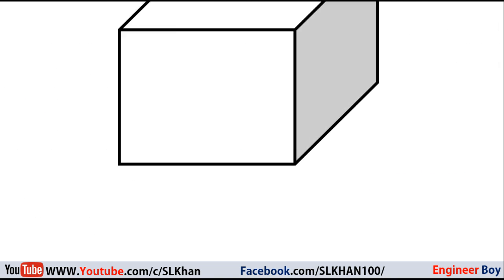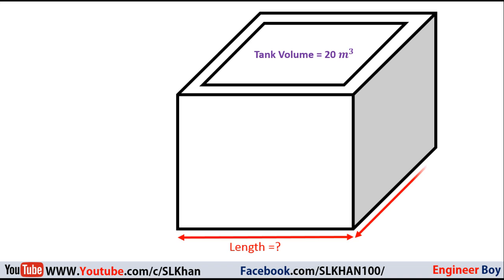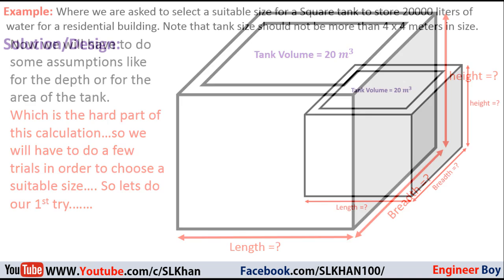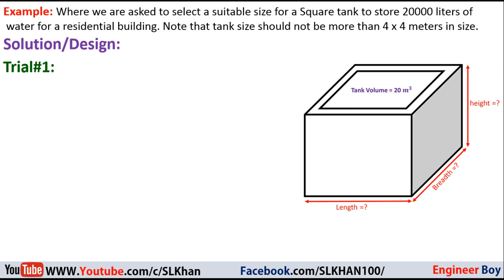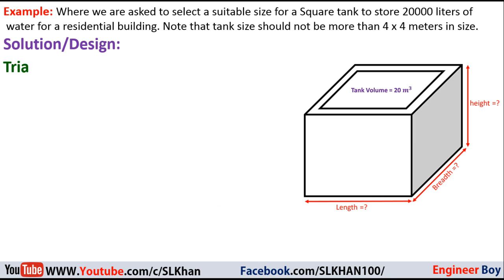Now we will have to make some assumptions about the depth of the tank or the area of the tank, which is actually the hard part of this calculation. We'll have to do a few trials in order to choose a suitable size. For our first trial, let me assume the depth of the tank is 1 meter, plus 0.5 meters for sludge-type materials, so the total depth equals 1.5 meters.